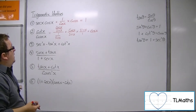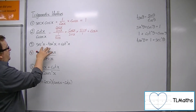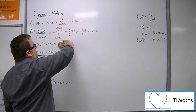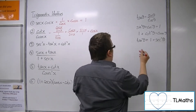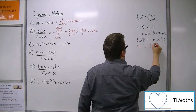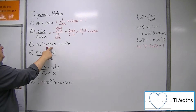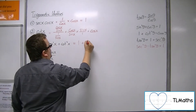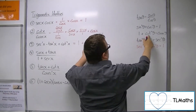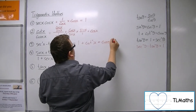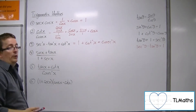For number 3, we've got sec squared minus tan squared plus cot squared. Sec squared minus tan squared — if we focus on that bit first and go to our identities, if I subtract tan squared from both sides, we get 1. So sec squared minus tan squared is 1. This becomes 1 plus cot squared x. And 1 plus cot squared we know is cosec squared x. So this expression simplifies to cosec squared x.